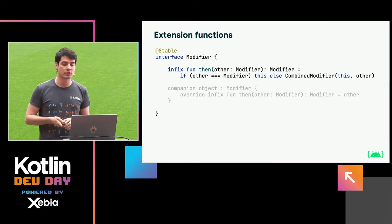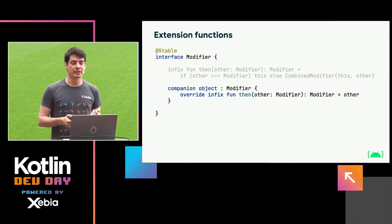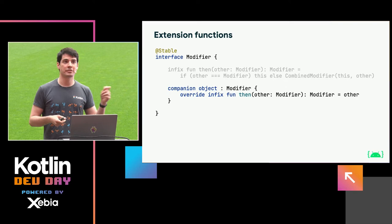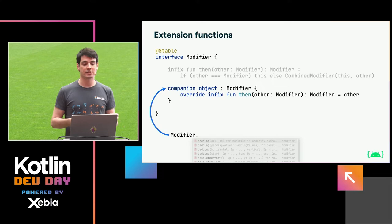There is also a companion object within this interface which implements the interface and acts as an empty implementation. The then method, when combining the companion object with some other modifier, simply returns the other modifier — so the companion is really just an empty implementation. This companion is what you're using when you write down modifier in Compose so you can start chaining things onto it. The name of the interface type modifier is pointing to the companion object.